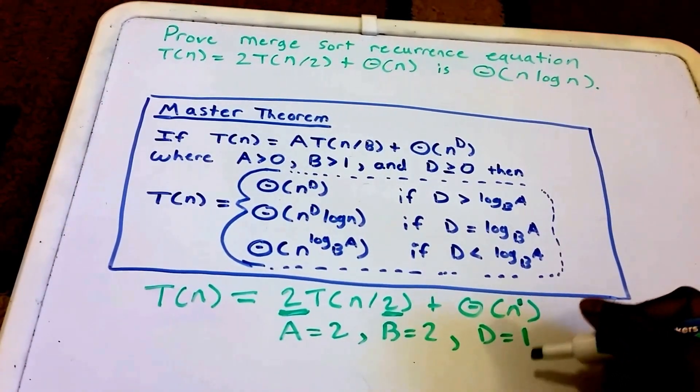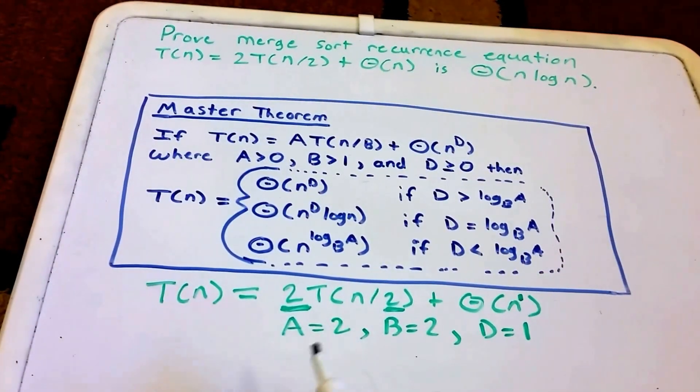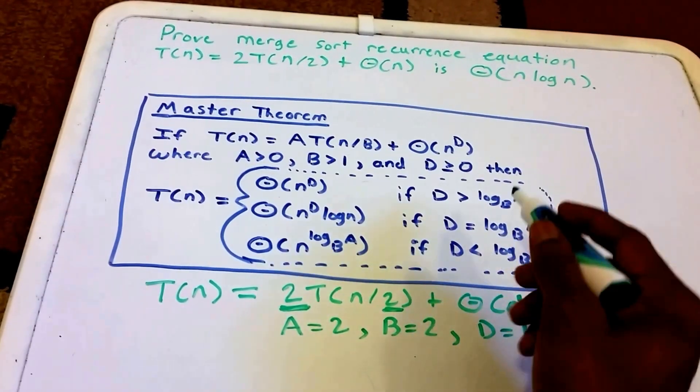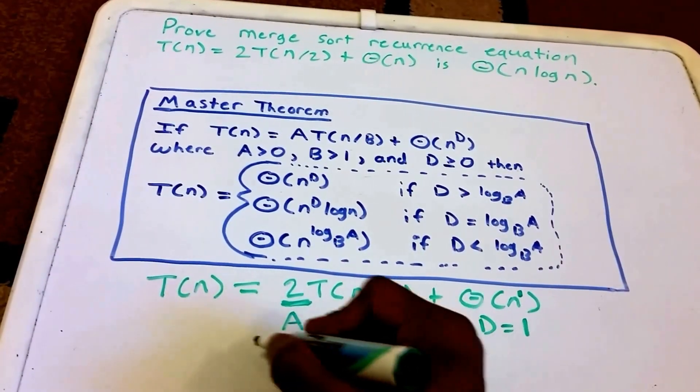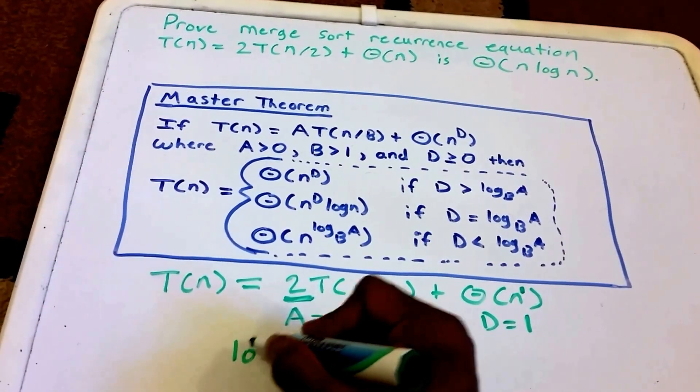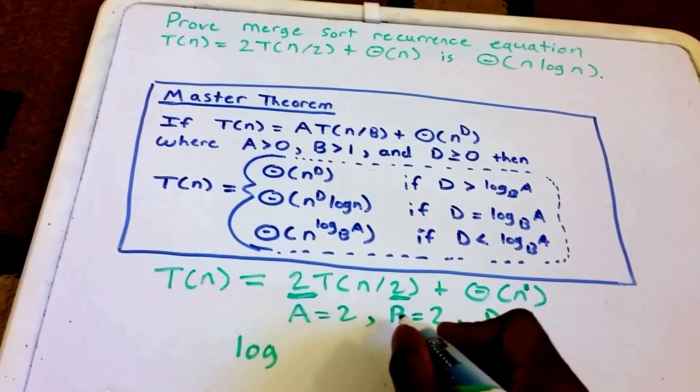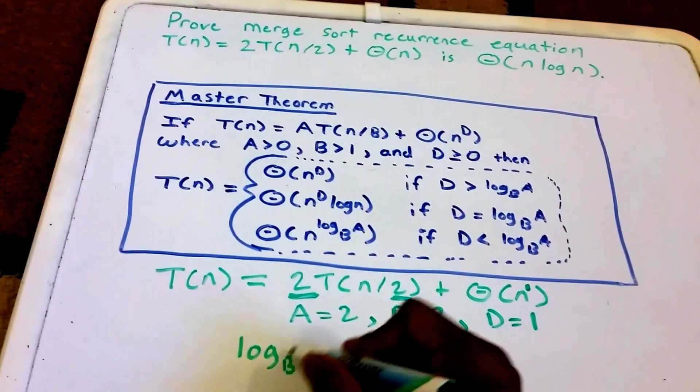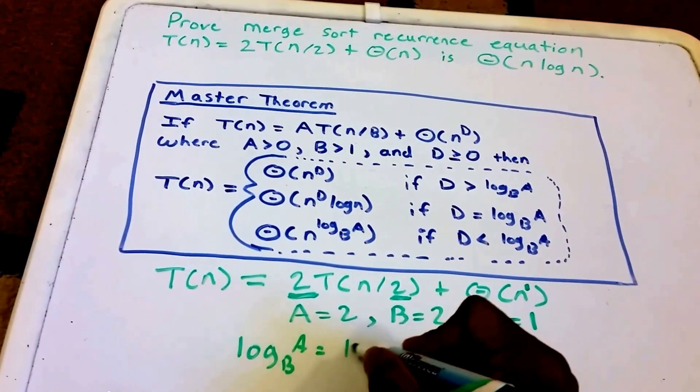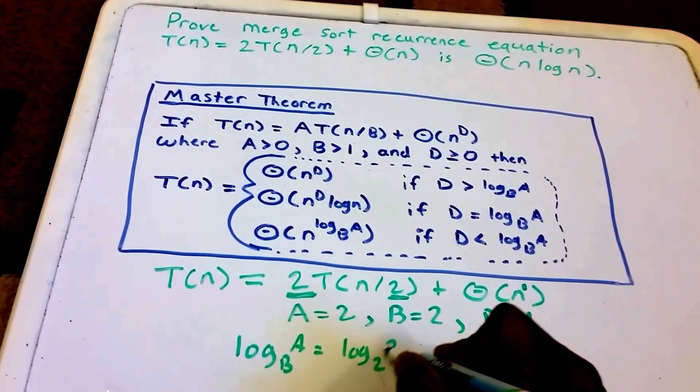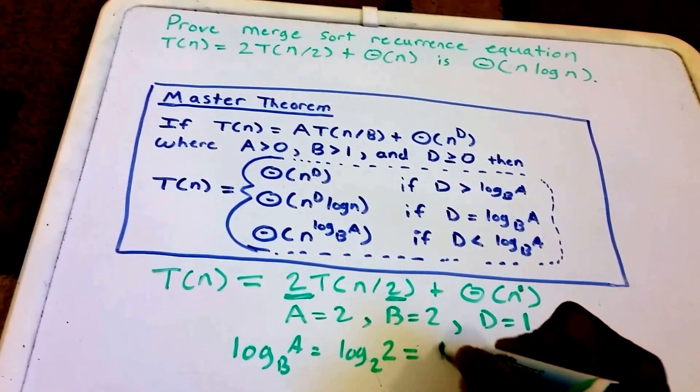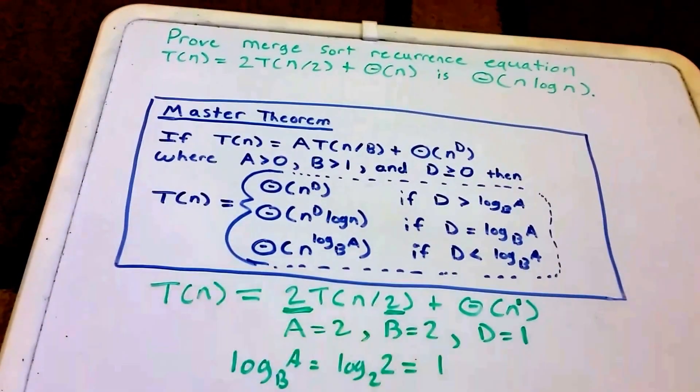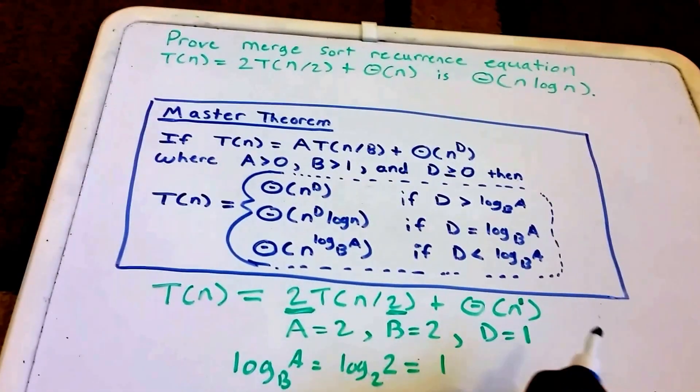So now what we can do is figure out what is our log base B of A. So log base B of A is equal to log base 2 of 2, which is equal to 1. I'm gonna erase this.